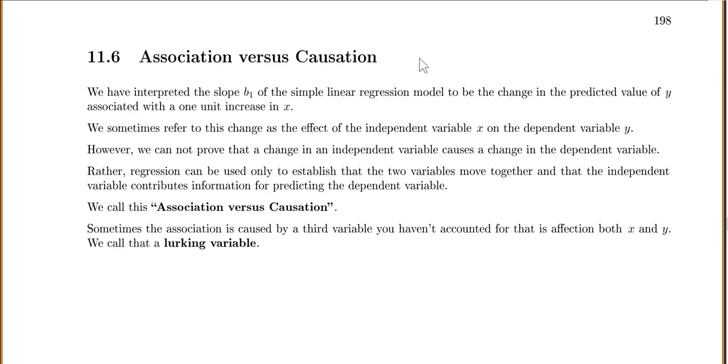We're going to talk about some of the important details of linear regression. The first one is association versus causation. We've interpreted the slope B1 of our simple linear regression model to be the change in the predicted value of y associated with a one unit increase in x.